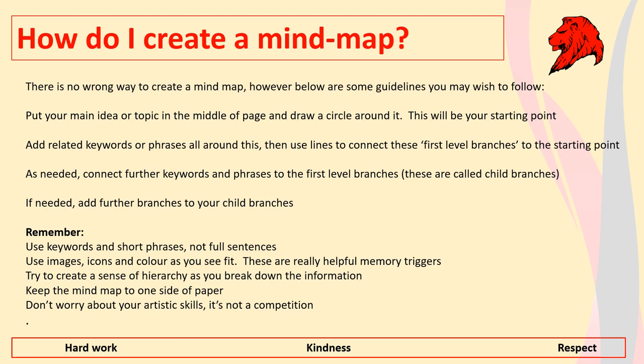Then you start to branch off from each of the keywords — what do you associate with that keyword? You shouldn't be using whole sentences because you're not going to remember them; use single words or single phrases. You can add as many branches to your mind map as you need. Use different images or different colours as you see fit to help you remember different sections. Remember to keep your mind map to one single side of paper.